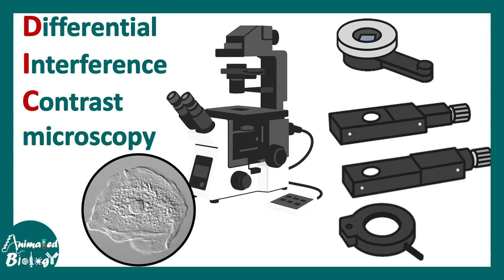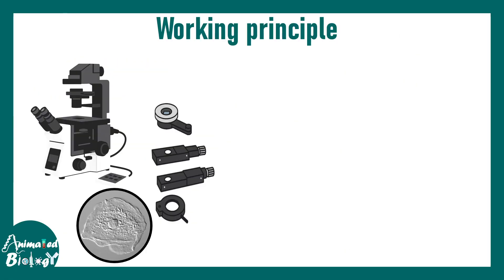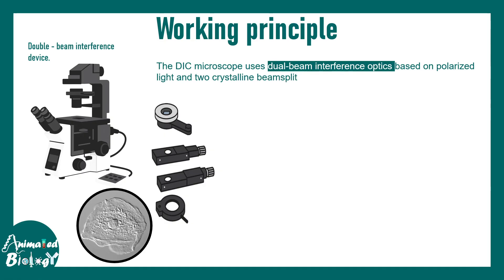In this video we'll talk about differential interference contrast microscopy, or DIC microscopy. Let's talk about the working principle in brief and then elaborate. The DIC microscope is a dual beam interference device that uses dual beam interference optics based on polarized light and two crystalline beam splitters known as the Wollaston prism or Nomarski prism.